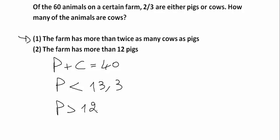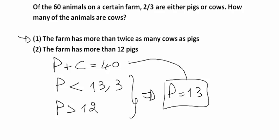And now I have P is greater than 12. I know that P is an integer. So here we have two conditions: P is less than 13.3 and P is greater than 12. So automatically I can know that P is equal to 13. There is no other solution. So P is equal to 13. I replace it here and number of cows equal to 27 in this case.